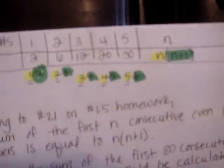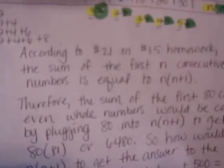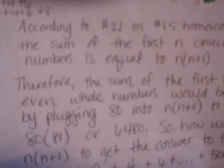So anytime we're dealing with a sequence of the first consecutive even whole numbers, you would use n times n plus 1. According to number 21 on 1.5 homework, the sum of the first n consecutive even whole numbers is equal to n times n plus 1.